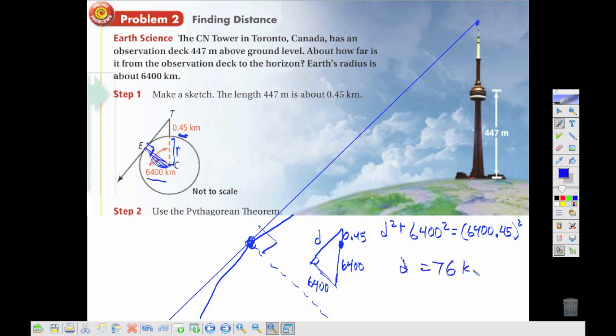I'm going to round that to the nearest kilometer, which would be 76 kilometers. Again, that would tell me how far it is from the top of the tower to where we see the horizon.